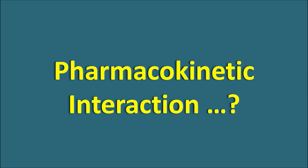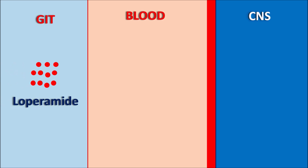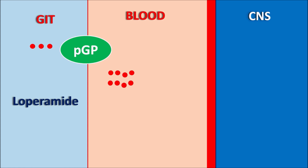Now let us check the pharmacokinetic interaction, considering three compartments: the GI tract, the systemic circulation, and the CNS. When loperamide is administered it enters the GI tract and is absorbed into systemic circulation, but its absorption is poor. On the GI tract wall, P-glycoprotein efflux pumps are present which pump loperamide back from the systemic circulation into the GI tract, thereby inhibiting its intestinal absorption.